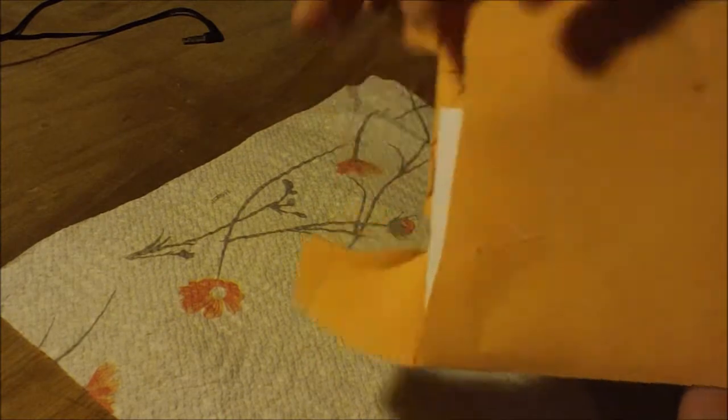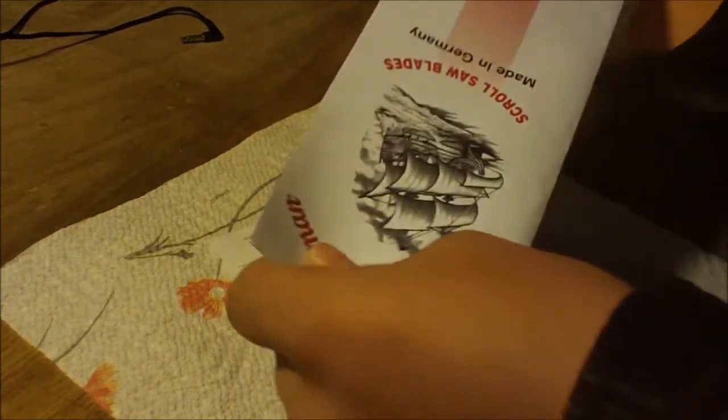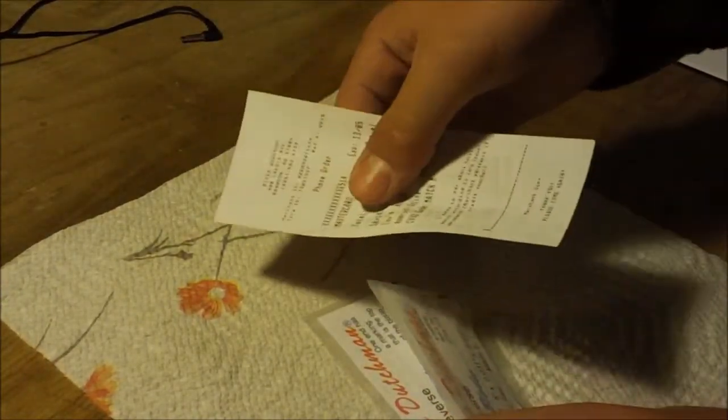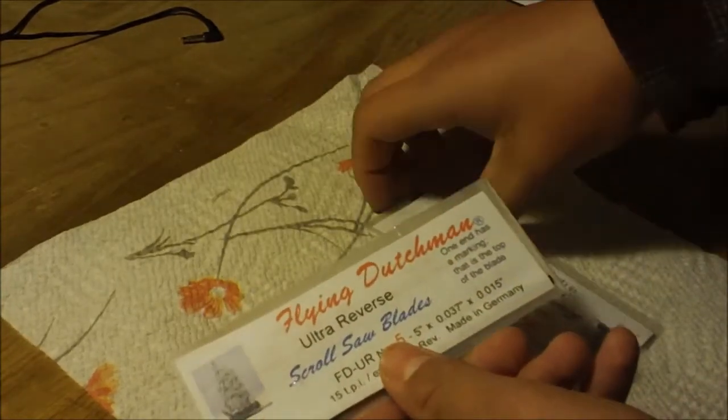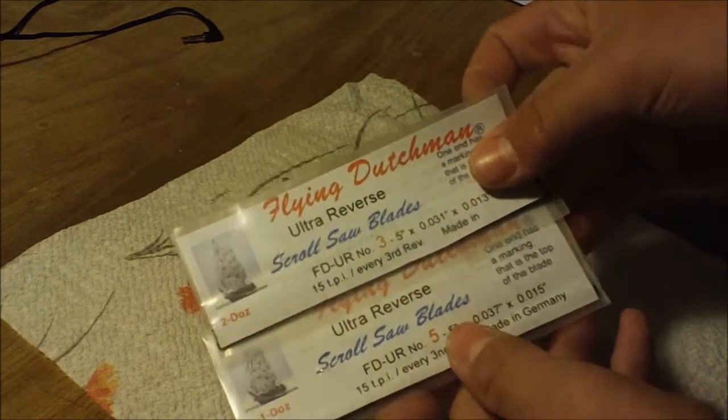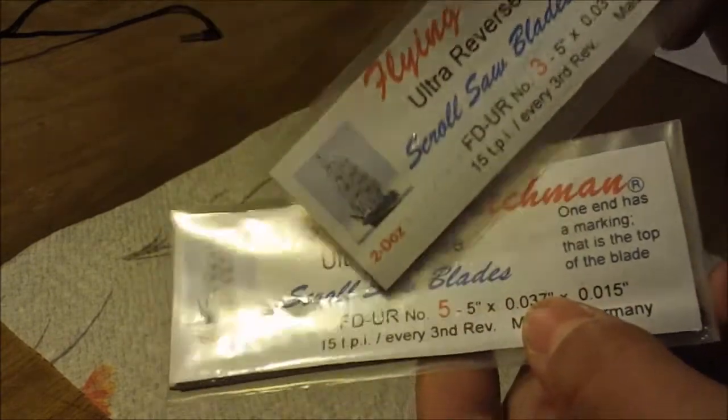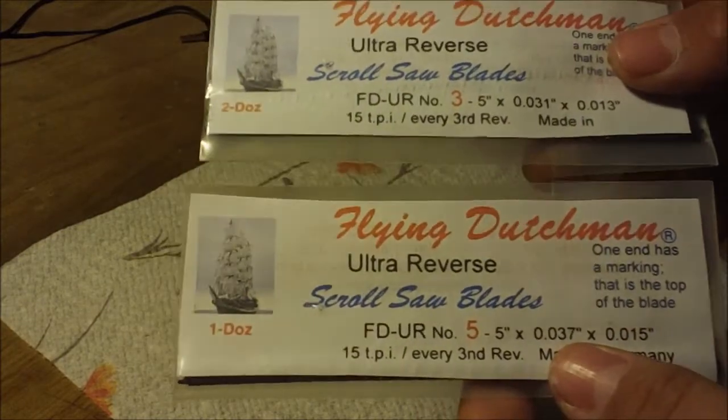And when you open it up and you dump it out, well, it depends if you ordered a gross or a couple dozen or what. But what I get is a pamphlet and it has different blade sizes and all the kinds of blades they have and some accessories on the back. And then the receipt and all that. And then all I ordered is some ultra reverse blades, number three and five. And I use the threes mainly for portraits and intricate stuff. And then the fives for like half inch or bigger stuff that I don't need tight turns for.